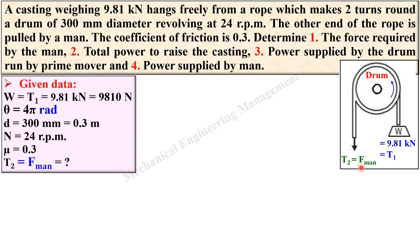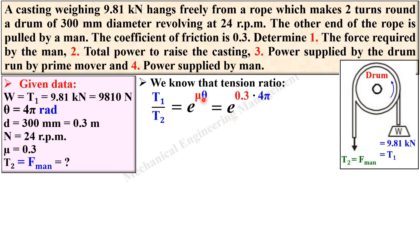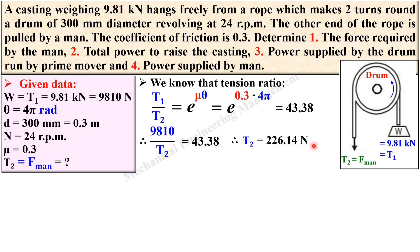Determine the force required by the man, so T2 is unknown. Since we have the angle θ, we use the tension ratio equation: T1 / T2 = e^(μθ). Substituting μ = 0.3 and θ = 4π, we get the tension ratio. With T1 = 9810 N, we can solve for T2. The result is T2 = 226.14 Newton. This is the first answer — the force required by the man equals 226.14 Newton.